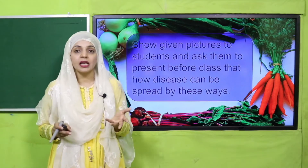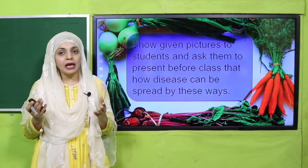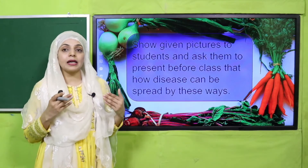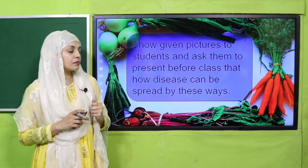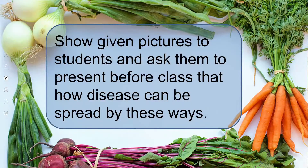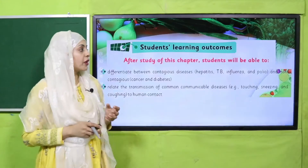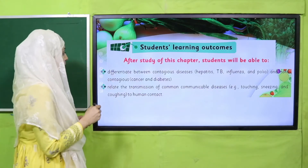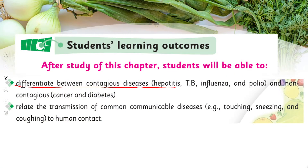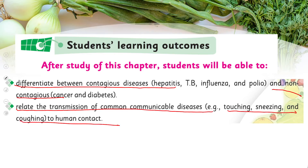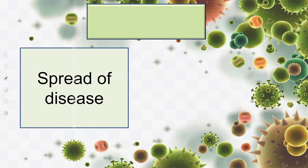Pictures are shown to students and they are asked to present before class how disease can spread in different ways. Pause the video and students will come and discuss each picture. By the end of today's lecture, students will be able to differentiate between contagious and non-contagious diseases, and relate the transmission of common communicable diseases — like touching, sneezing, and coughing — to human contact.